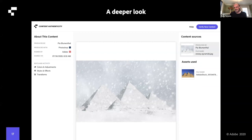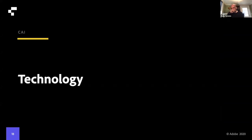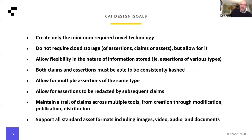Now I'll talk about how all of this works. From a technology design standpoint, our first goal is to create only the minimum required novel technology — we will use existing standards wherever we can, including for cryptography, how we store metadata in files, and how we access metadata in the cloud. We won't require cloud storage, though there are many advantages to it — for example, if thumbnails or captured versions of images are needed for A/B forensic comparisons, it would be prudent to store those in the cloud rather than embed them in the file and cause file bloat.